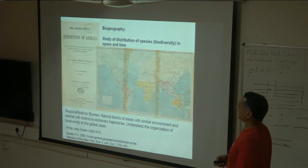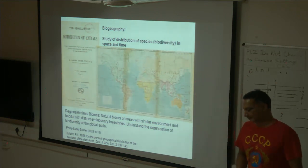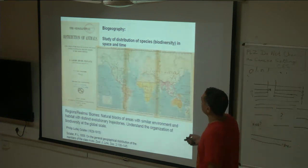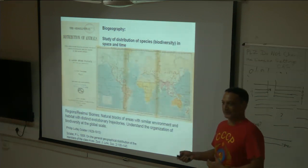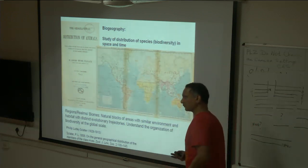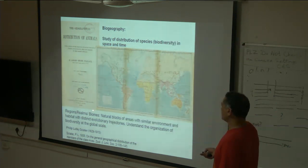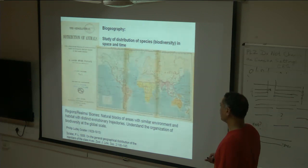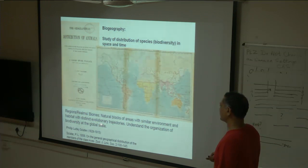These realms are regions that have by and large similar environmental conditions, usually separated by a barrier, and the species composition shows a turnover as you go from one realm to another. That's what biogeography is all about — it studies the distribution of species. In the past, people were just looking at space, how species are distributed in space. But now, biogeography includes the time component also.